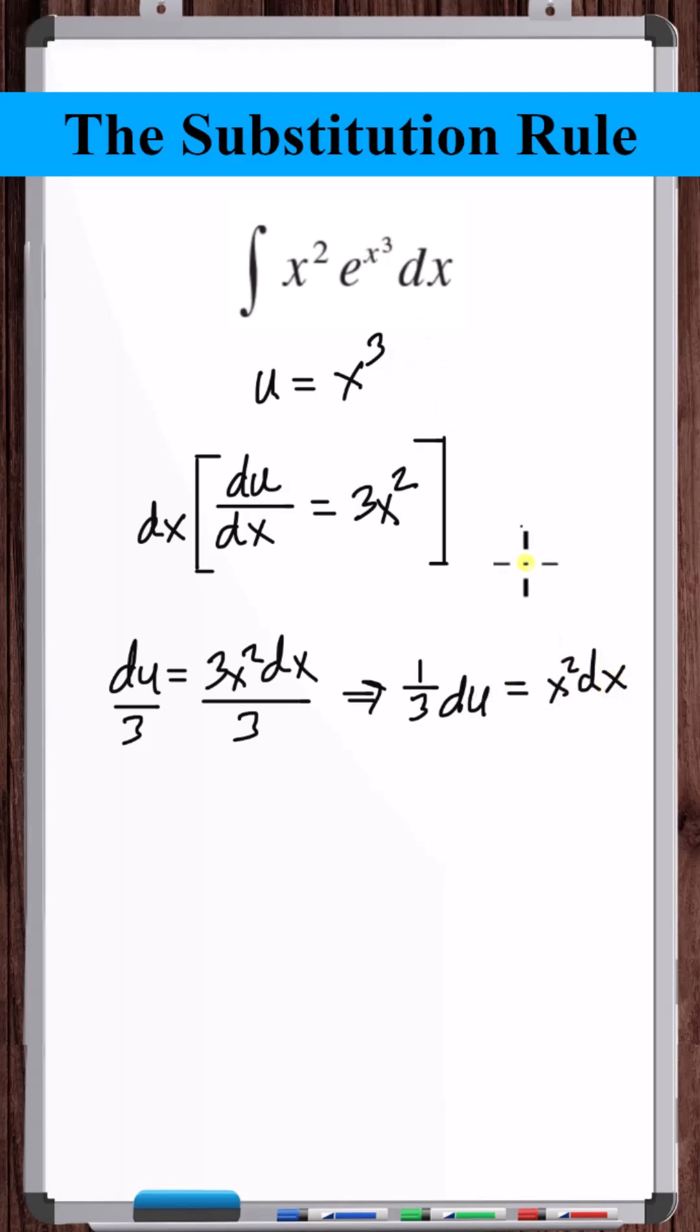So now let's substitute for the x cubed and the x squared dx. We can solve this integral. Now let's just substitute x cubed for u.